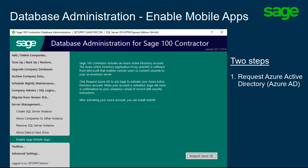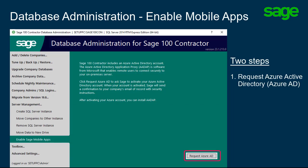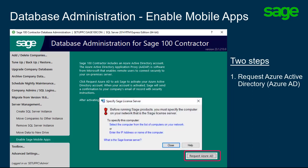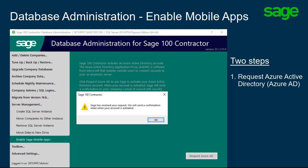If you try to request the Azure AD and you are not on a subscription license, you receive an error message. When you click the button, if Database Administration cannot locate the license server, you may receive a prompt to select a license server. The information on the screen changes slightly and a message displays to wait for a confirmation email.